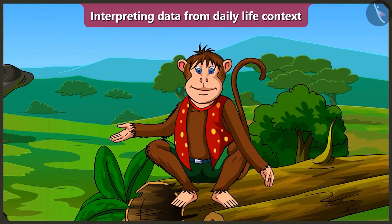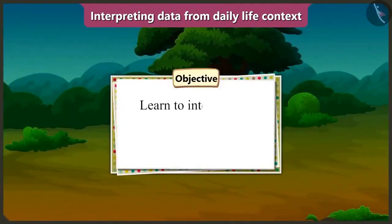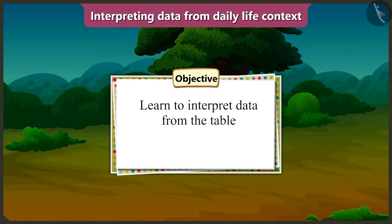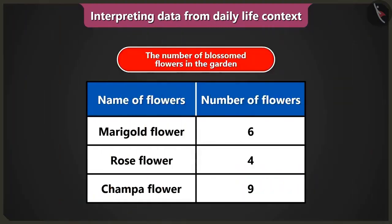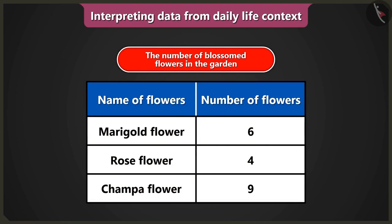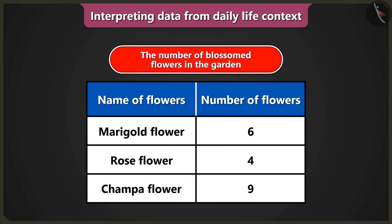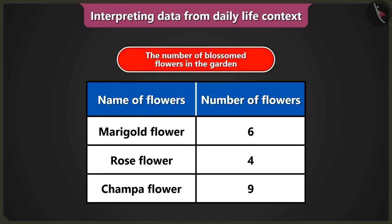Today in this video, we will learn to interpret data from the table. Look, there are different flowers in this garden. How many flowers have blossomed? That data has been collected and filled in the table. That's why it has been written on the top of the table: the number of blossomed flowers in the garden.